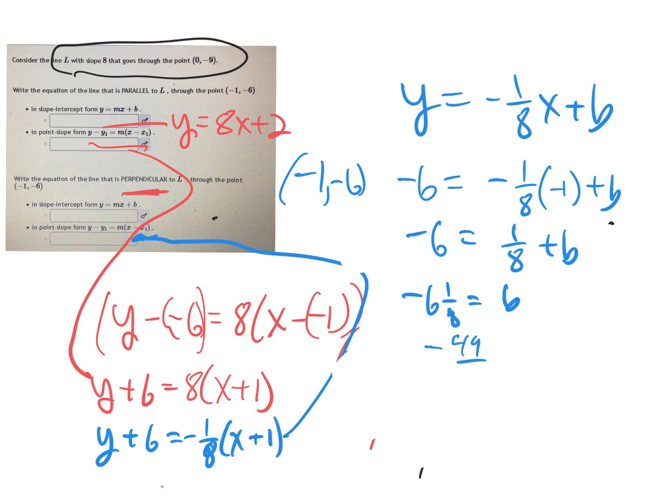The other way to do it—maybe fractions aren't your thing—I could multiply everything by 8. That'd be -48 equals 1 plus 8B. So I'm going to subtract 1: -49 equals 8B. Divide by 8, so I get -49/8. I think that's what I had before. So that's writing another equation to solve it.